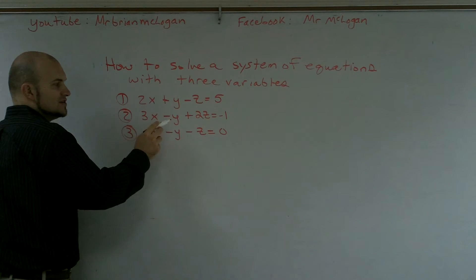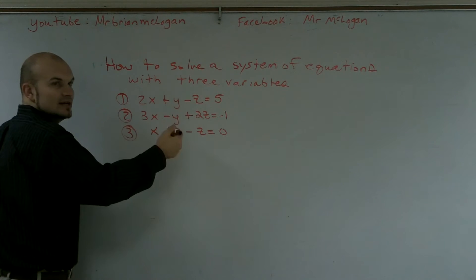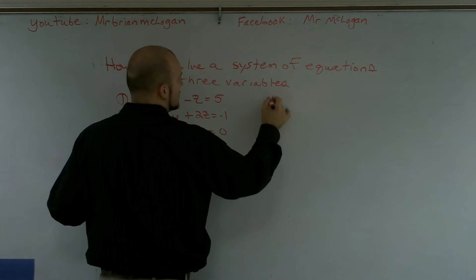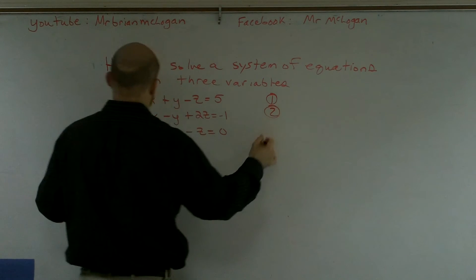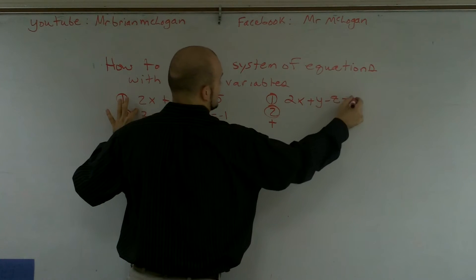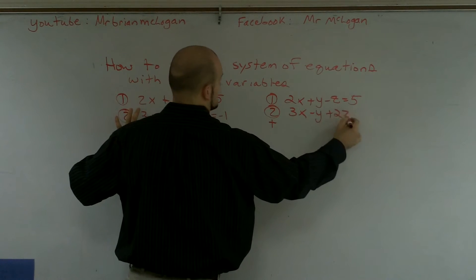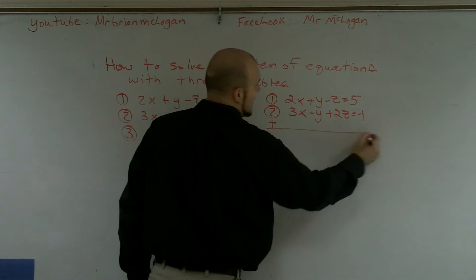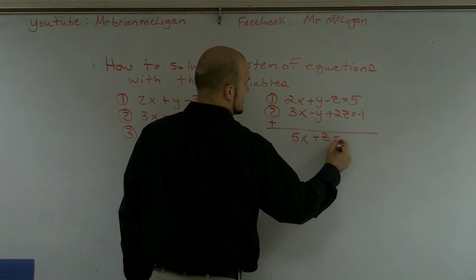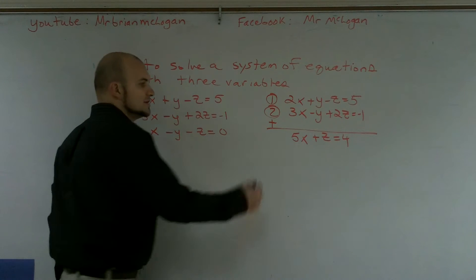Since equations one and two both have the same coefficient and one's positive and one's negative, if I just add them together, the y's cancel out because y plus a negative y is zero. So adding them: 2x plus y minus z equals five, and 3x minus y plus 2z equals negative one. Adding them together I get 5x plus z equals four. I've successfully eliminated the y variable, and I'm going to call this new equation a.